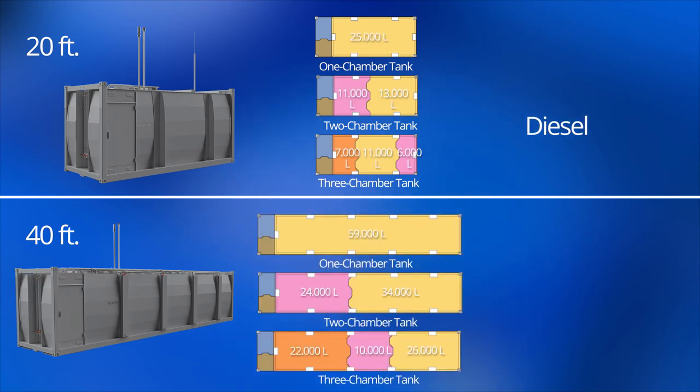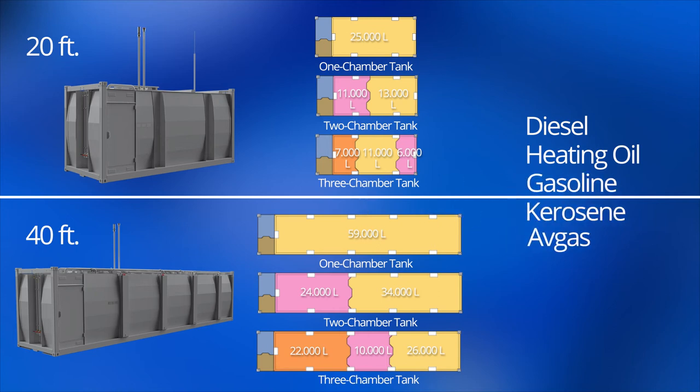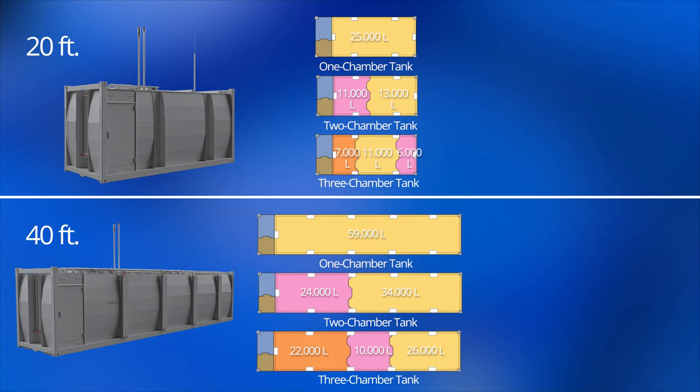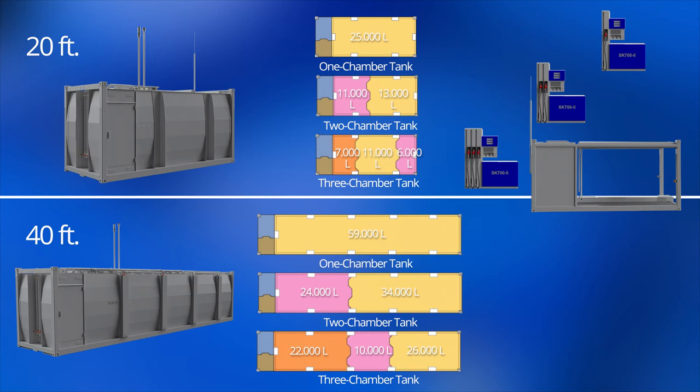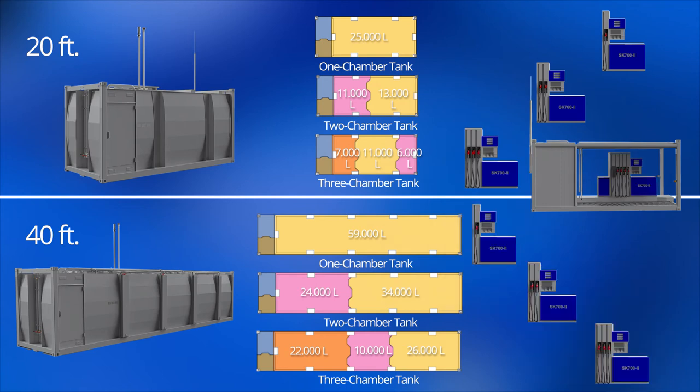Suitable for diesel, heating oil, gasoline, kerosene, or avgas. Accordingly, the fuel pump platform can be equipped with a single hose, two hose, three hose, or, for additional AdBlue, a four-hose dispenser.